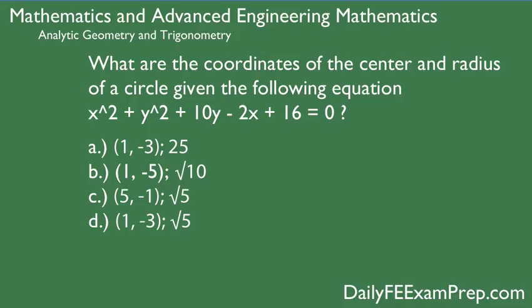Today's problem is: what are the coordinates of the center and radius of the circle given the following equation — x squared plus y squared plus 10y minus 2x plus 16 is equal to 0.